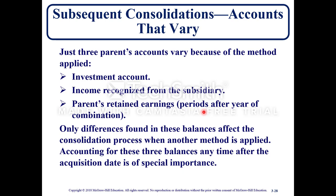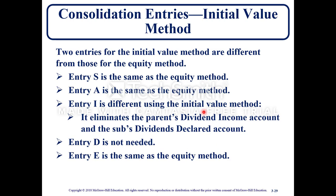In periods after the year of acquisition, only differences found in these three balances affect the consolidation process when another method is applied. Two entries for the initial value method are different from those of the equity method. Using SAIDE: entry S is the same as the equity method, entry A is the same as the equity method. Entry I is different — it determines the parent's dividend income account and the subsidiary's dividends declared account. Entry D is not needed. Entry E is the same as the equity method.